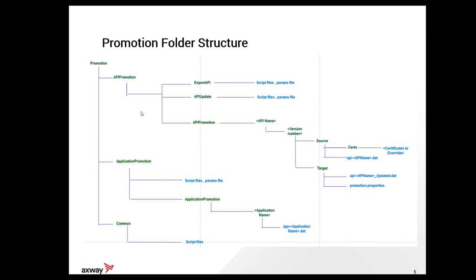The promotion folder structure layout is as shown. The green ones are folders and the blue ones are files. The only inputs to the entire promotion process are the params file, promotion.properties file, and one or more certificates to override the API configuration. The API name, version number, source, search, target, and application name folder structures are created by the scripts. The API.dat and application.dat files are also generated by the scripts when they are executed.